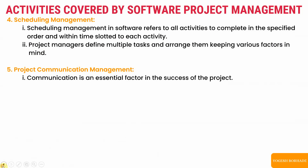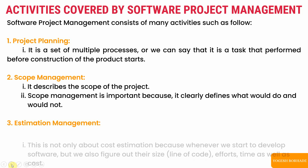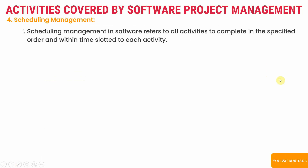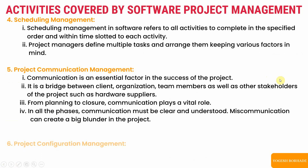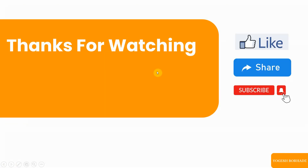So that's it for this video. We've covered the six activities of software project management: project planning, scope management, estimation management, scheduling management, project communication management, and project configuration management. If you haven't watched the previous lectures, links are in the description and i-button. If you understood the concepts, please like the video, share it with your friends, and subscribe the channel for more. Thanks for watching.